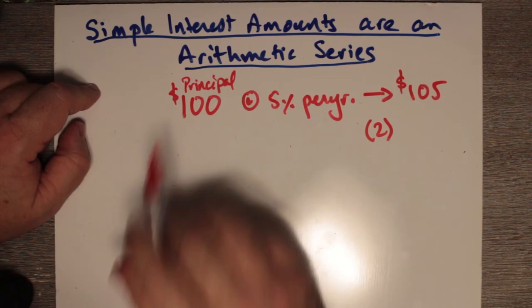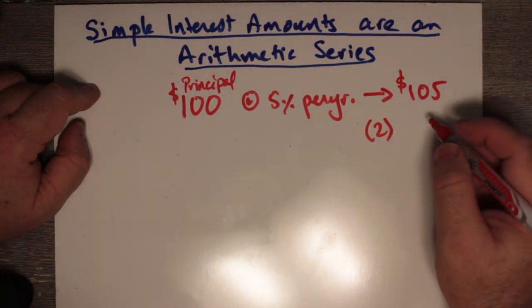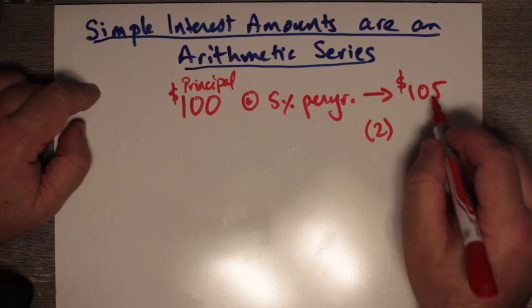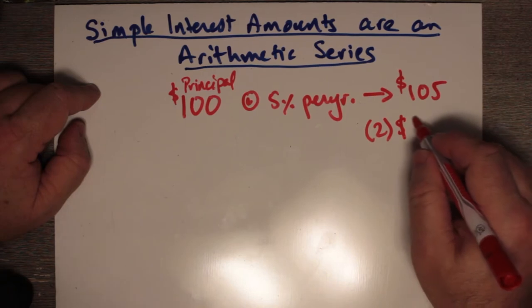And so 5% of $100 becomes another $5, which we add to your last balance, $105. And so in year two, we get $110.